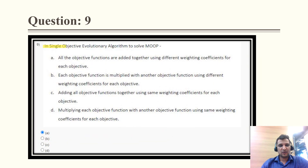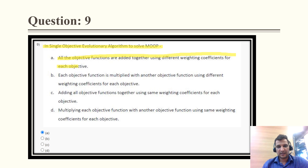Question 9: in a single-objective evolutionary algorithm used to solve multi-objective optimization, which statement is correct? All the objective functions are added together using different weighing coefficients for each objective — the key word is 'different.' Therefore this is the correct option A.